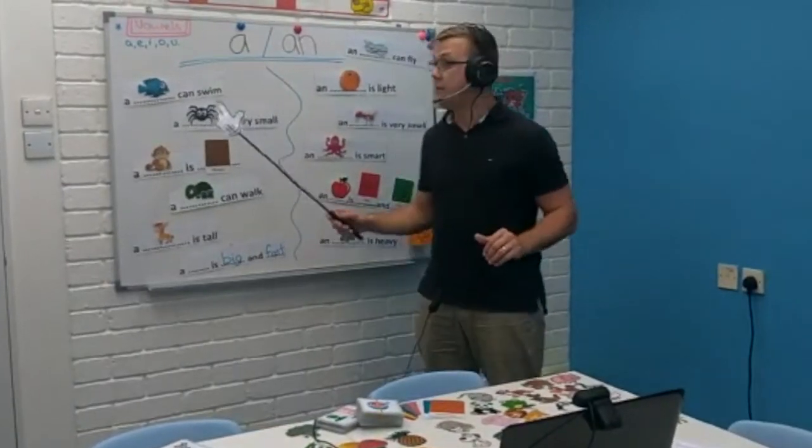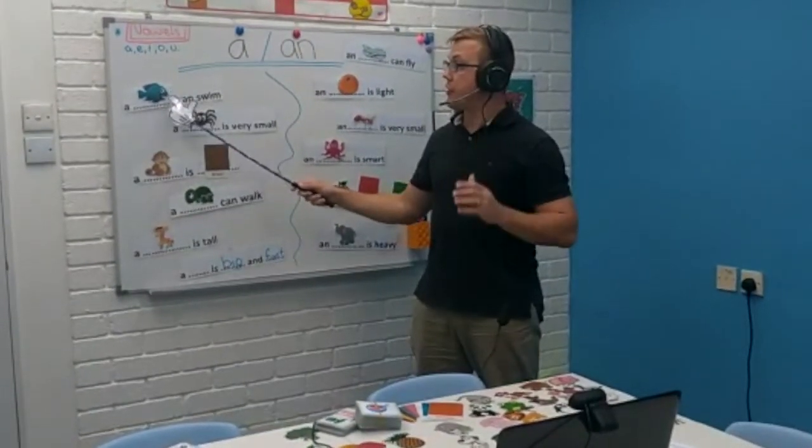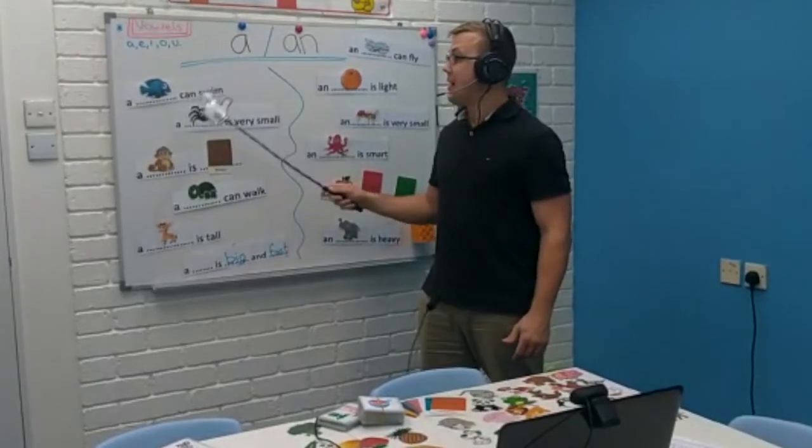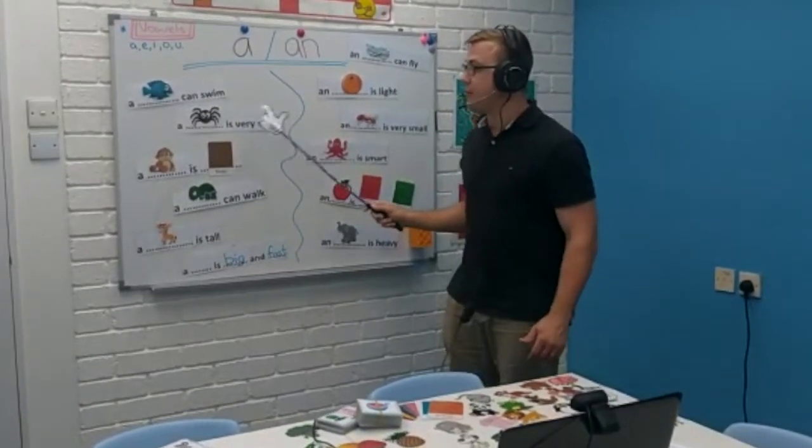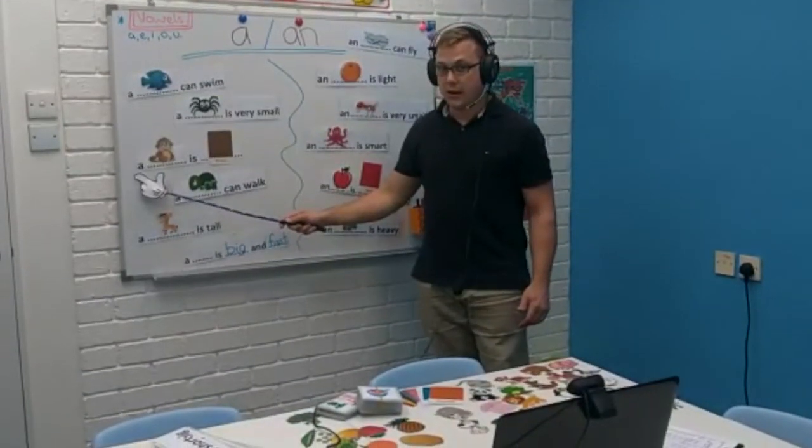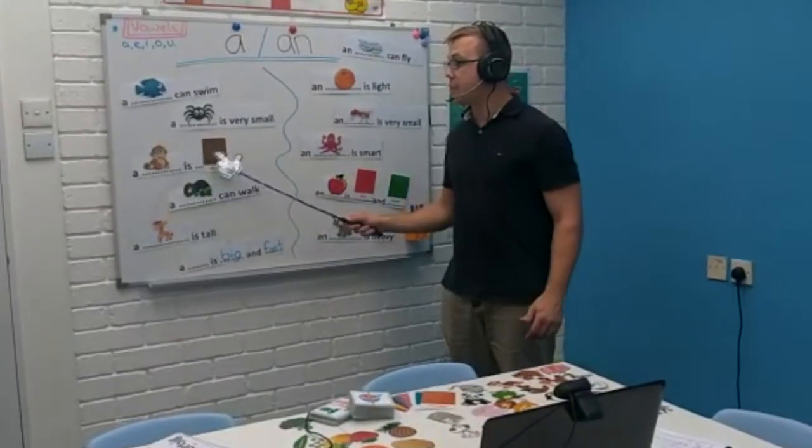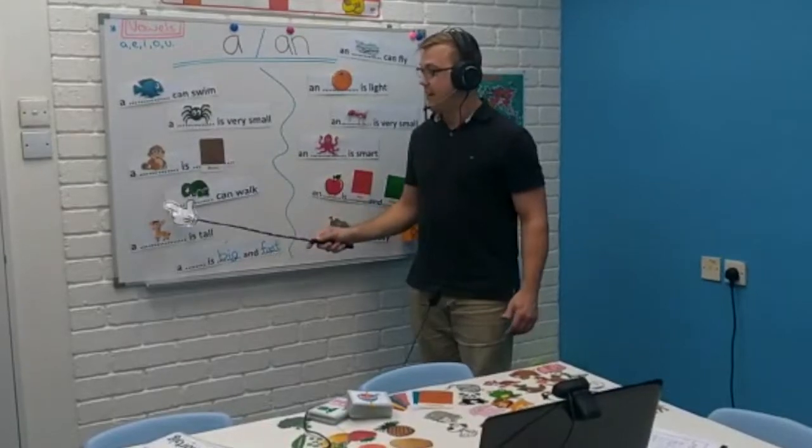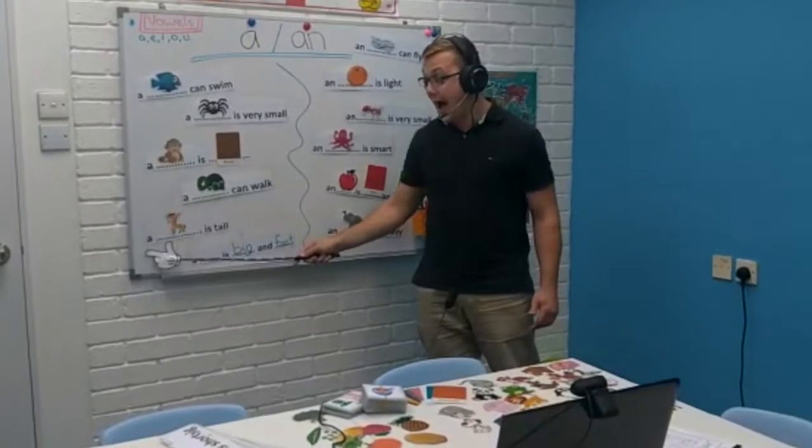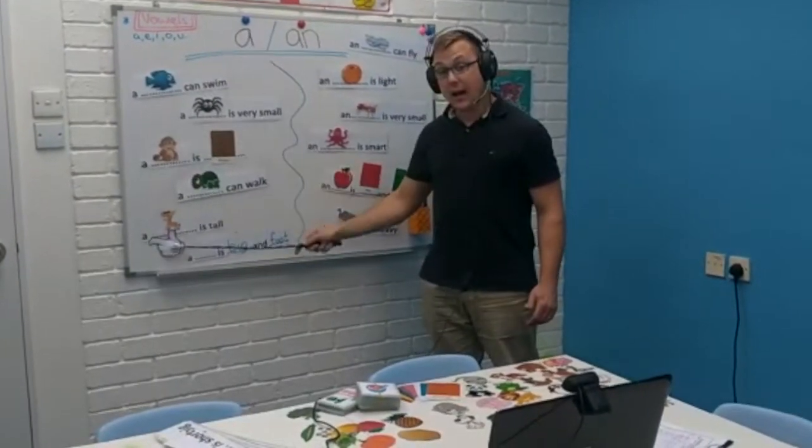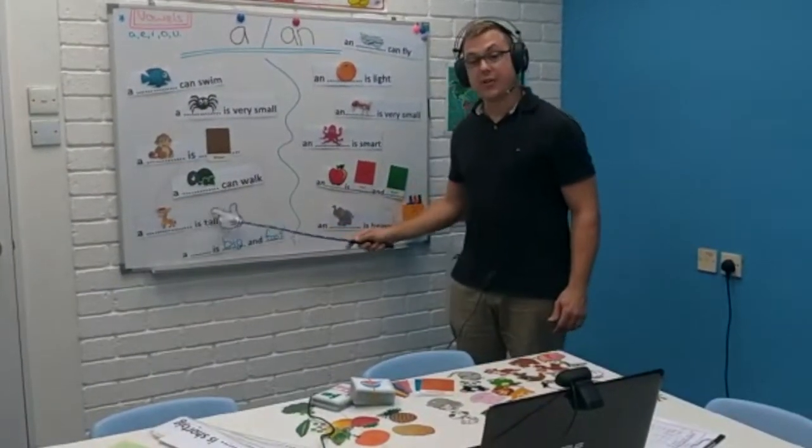So let's just go over again. A fish can swim. Very good. A spider is very small. Very good. A monkey is brown. Yes. A tortoise can walk. Yes. A giraffe is tall.